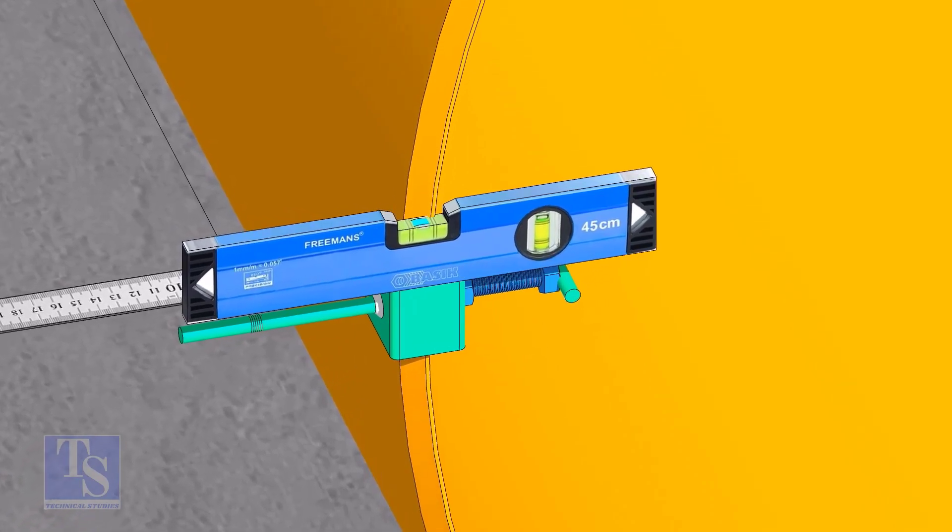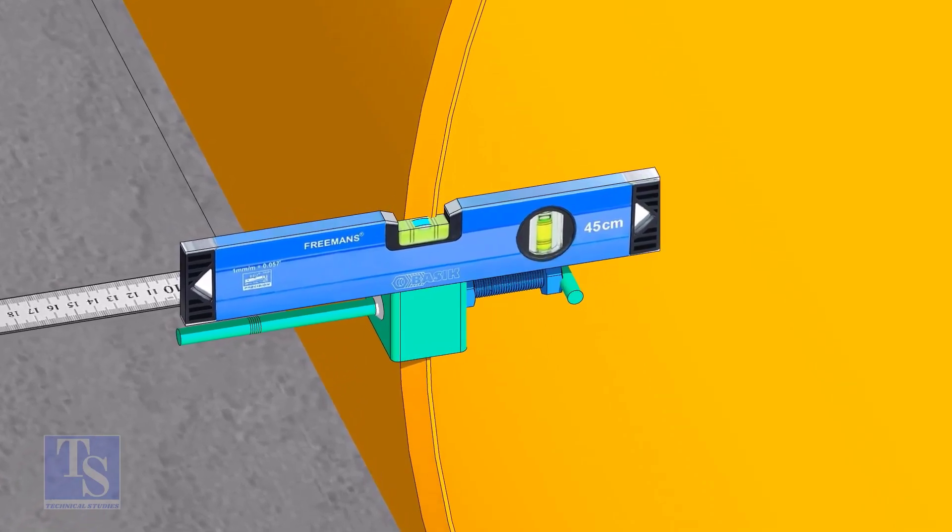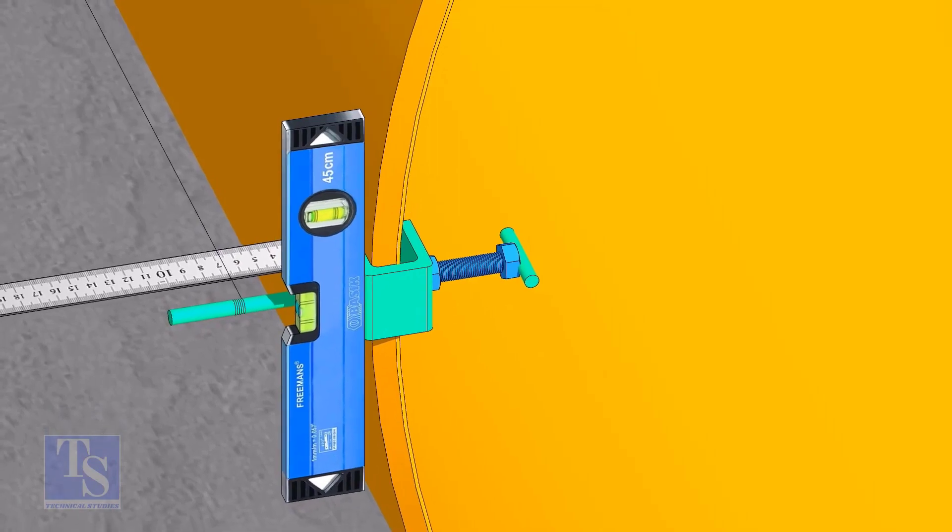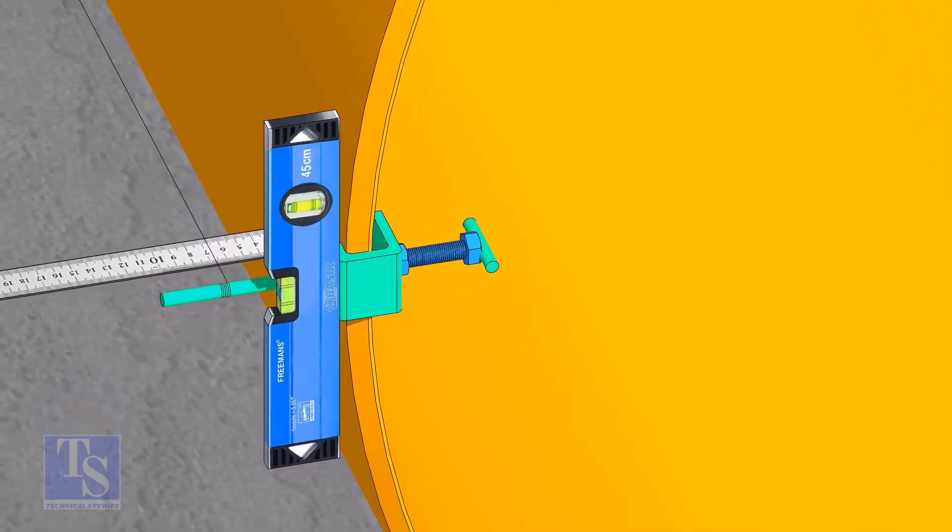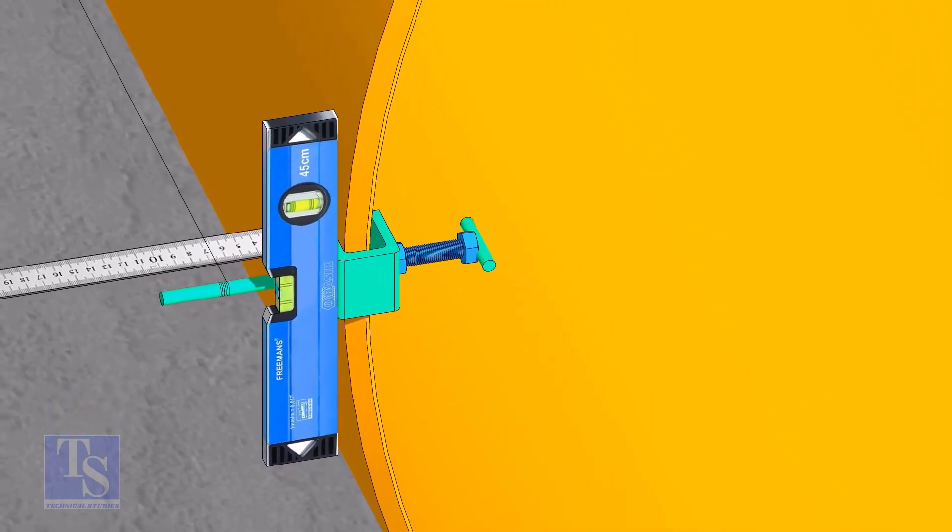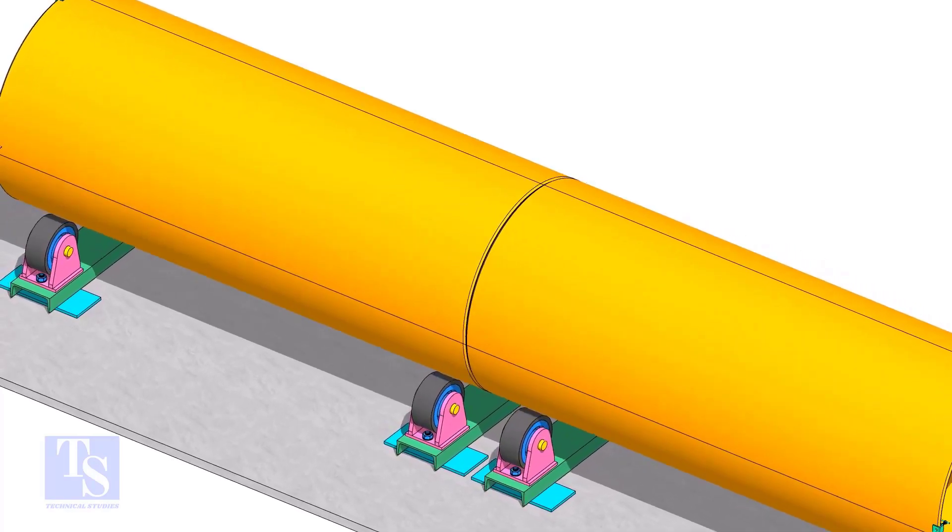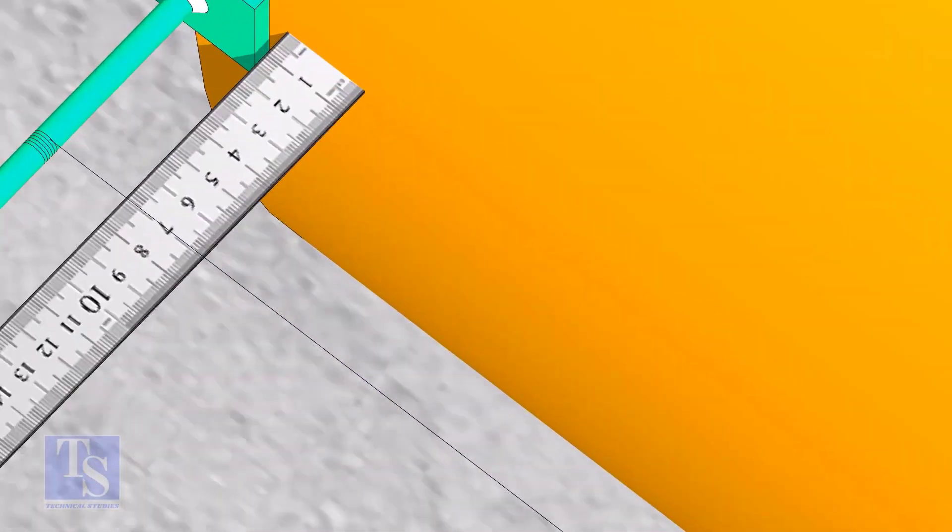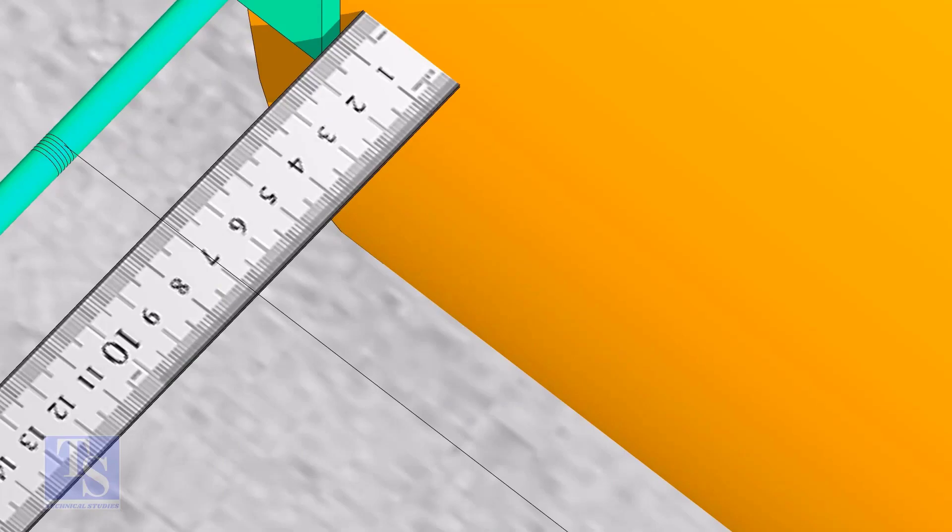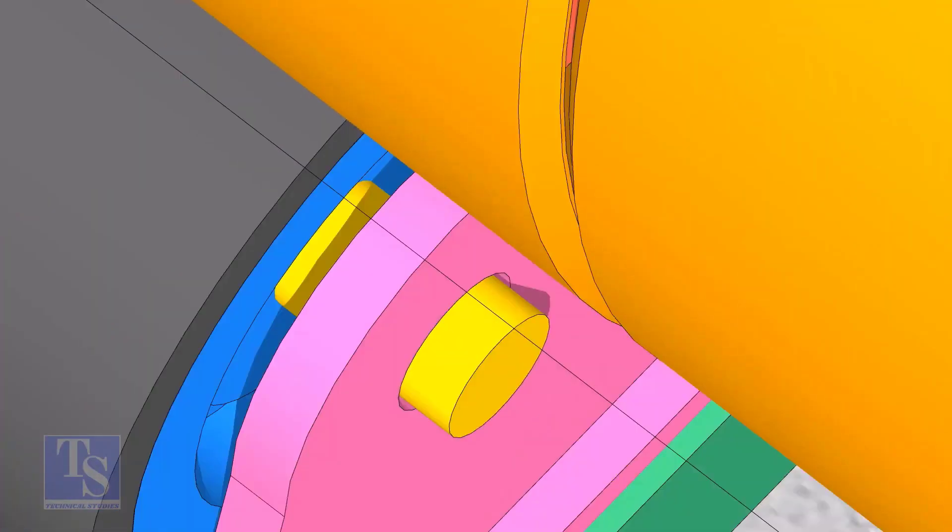As you put the clamp roughly 90 degrees apart, make sure the clamps are level. Tie the piano wire tightly on these clamps. Make sure the distance between the shell to the piano wire is equal at both ends.